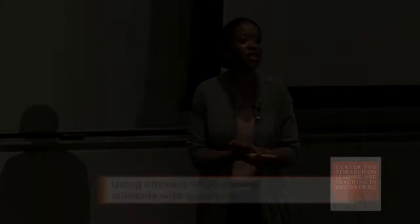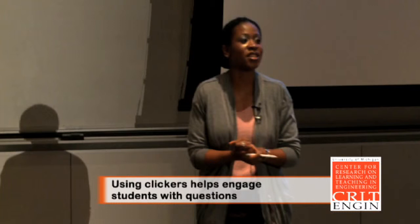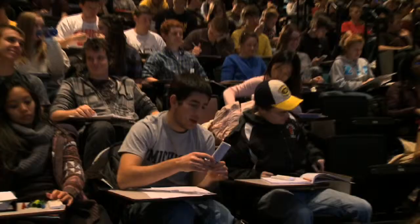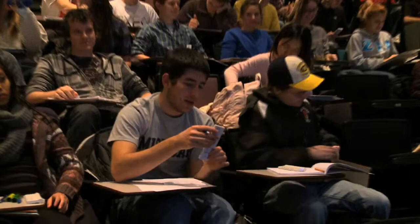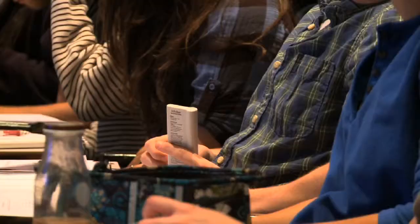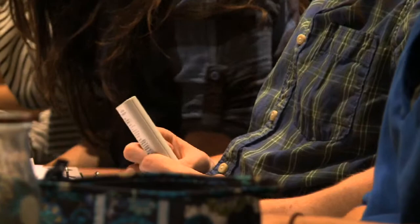It's clicker time. Here's your clicker question: you have a mixture of water and ice. We have the temperature and the pressure. What values are the same for gas, liquid, and solid phase for that system?